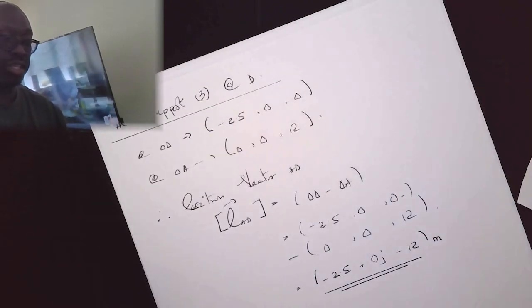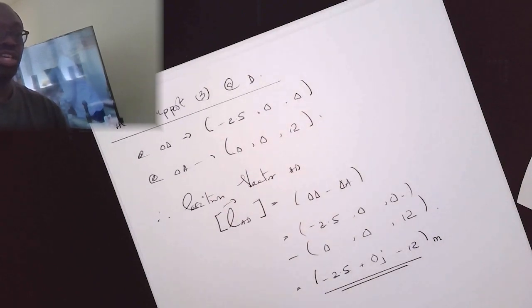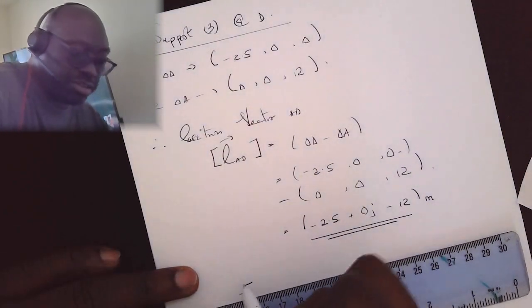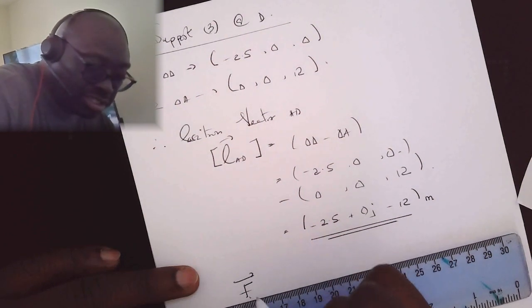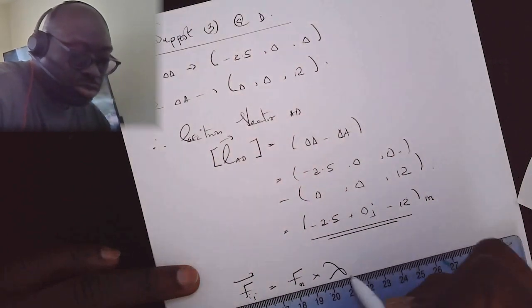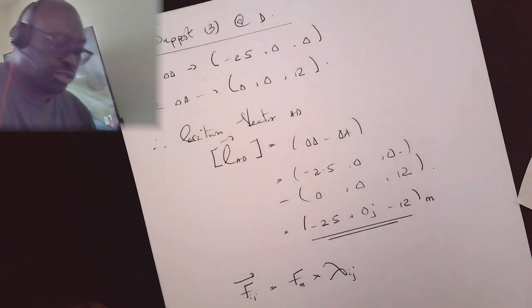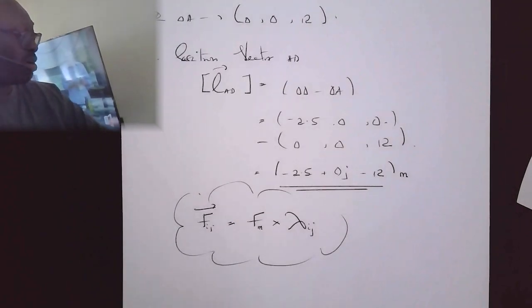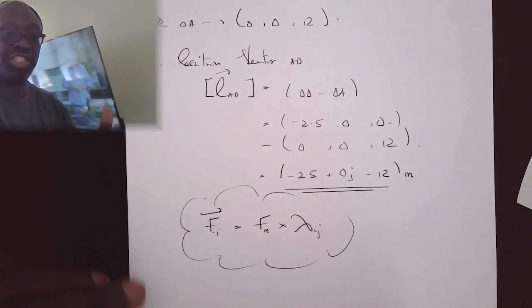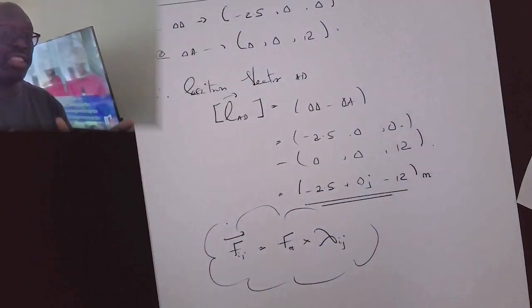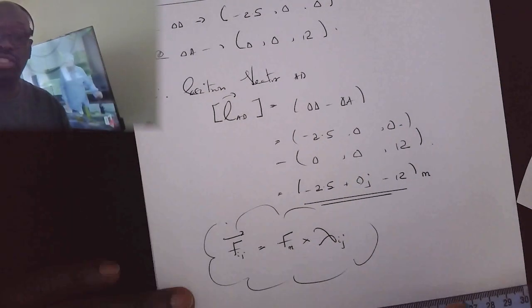The key part is to work out the unit vector, because what we're trying to do is use the force vector definition to predict where the forces are, or the magnitude of the forces within the structure. The force vector is equal to the magnitude of the force multiplied by the unit vector. We'll use the equation of equilibrium to figure out the unknown forces within this force system.